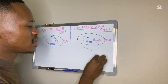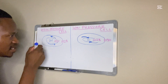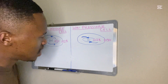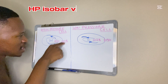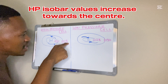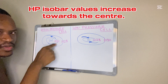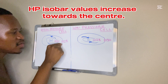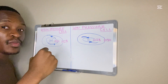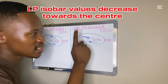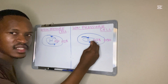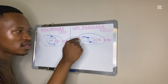Another thing to look at is the isobar values. Remember these lines are isobar lines joining places of equal pressure. For high pressure, the isobar values increase towards the center — for example 1028 mb, then 1080 mb. So increasing isobar values towards the center indicate a high pressure cell. If the isobar values decrease towards the center, that is a low pressure cell.